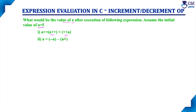We have already discussed the difference between post-increment and pre-increment, and similarly post-decrement and pre-decrement. That video link will be provided in the description for your reference. Post-increment means the value of the variable is used first, and then the variable value gets incremented. Pre-increment means the value gets incremented by 1 first, and then the incremented value is used.